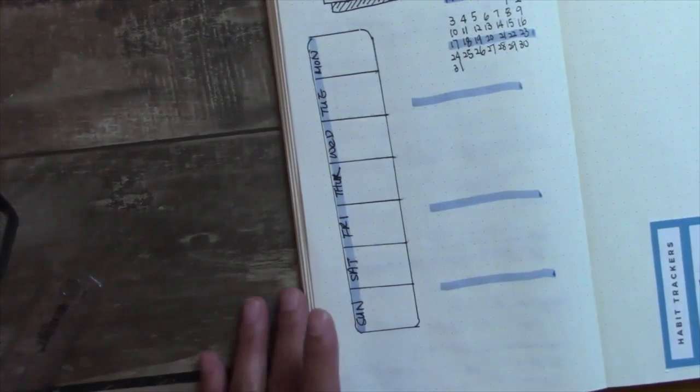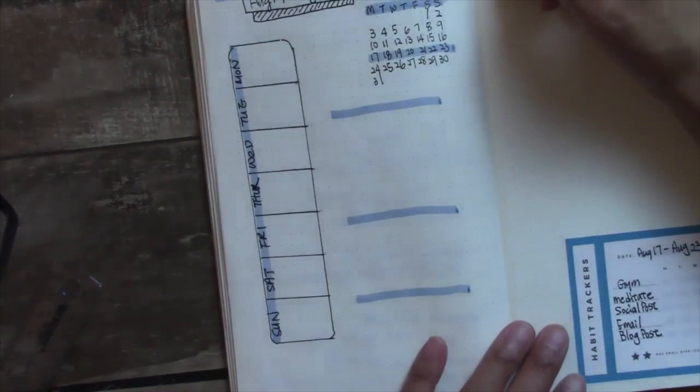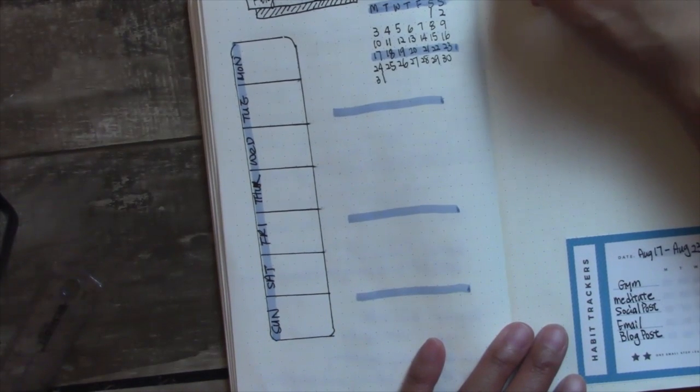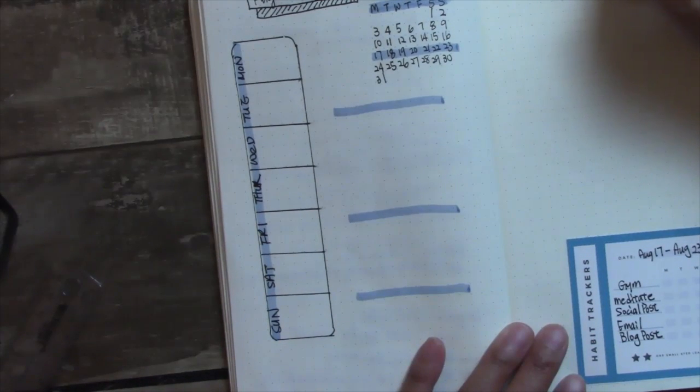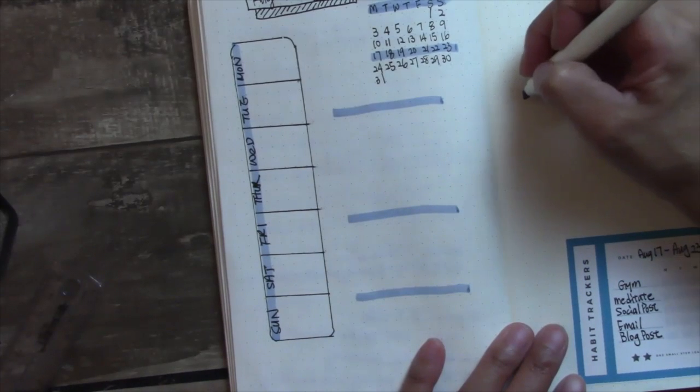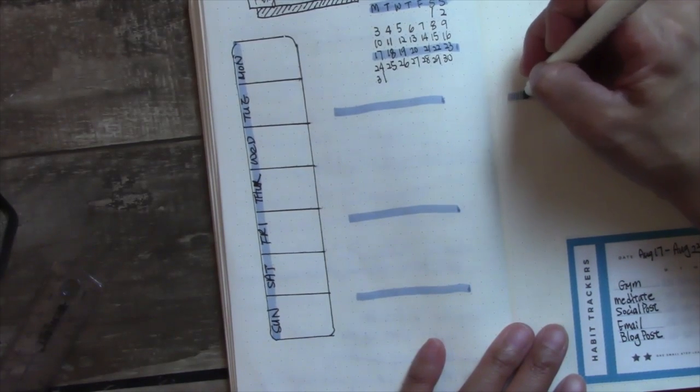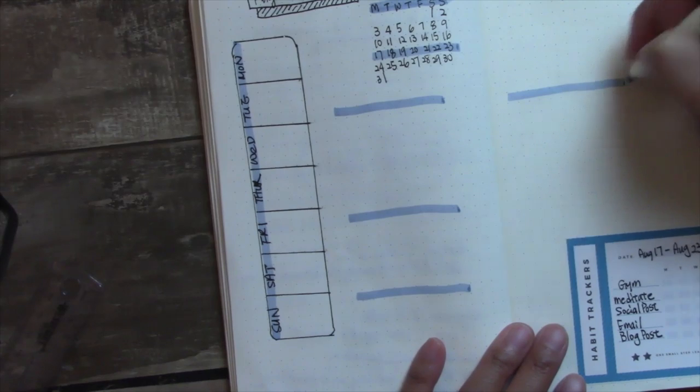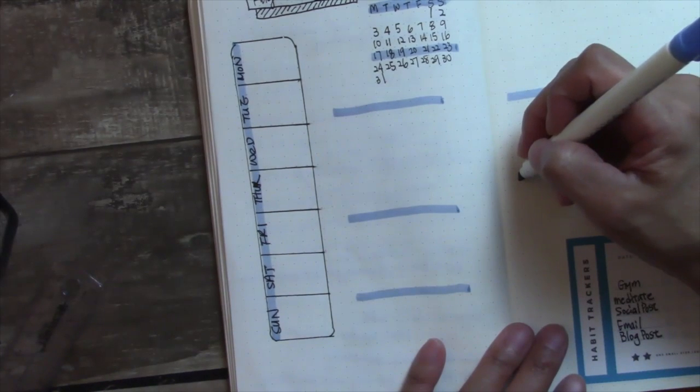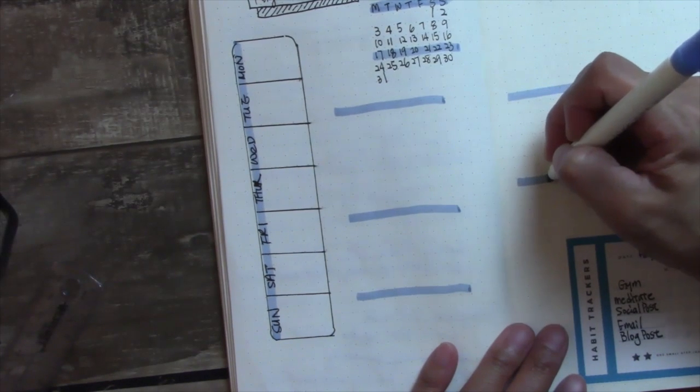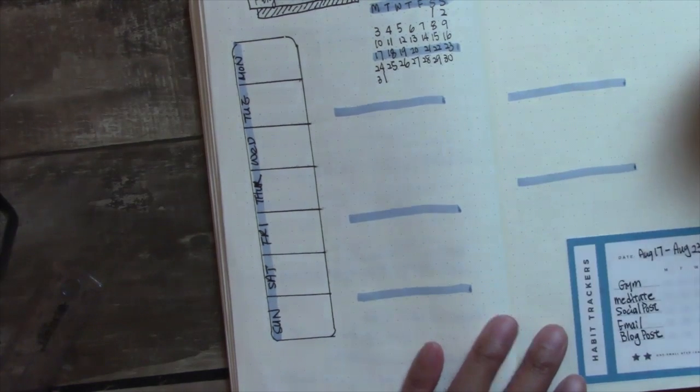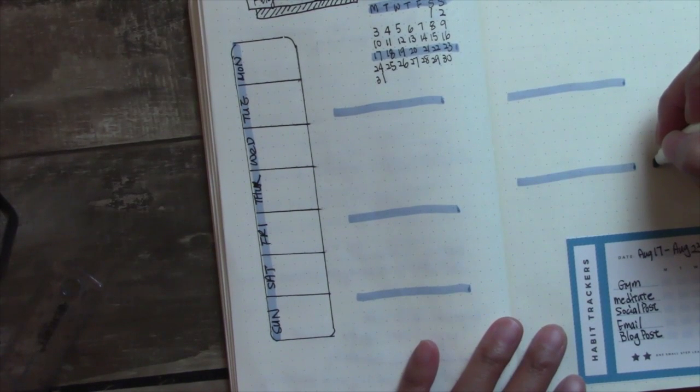If you go to my Facebook group, it's called the Confidence Lab with Michelle Quay. You can search the Confidence Lab and you will see me. You can come and join the group, and in the group I would have these habit tracker available for you to download.